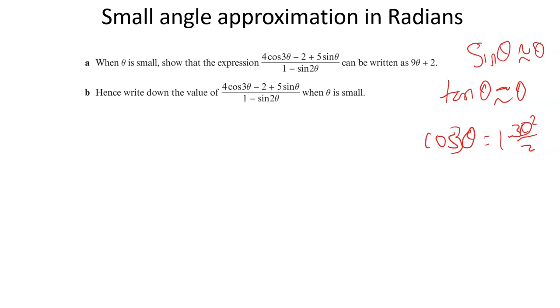So let's write out what we've got, and that is 4 times cos 3 theta. So we need to put that in a bracket and have this in. So 1 minus, and it's 3 theta, but that's all squared, over 2. So minus 2, and then plus 5 times sine theta, well that's just theta, so 5 theta. And it's all divided by 1 minus, and sine of 2 theta, sine of theta is theta, then that's just going to be 2 theta.